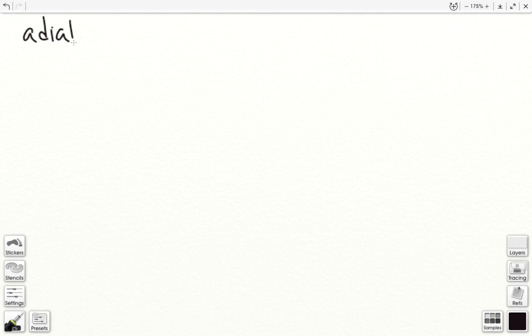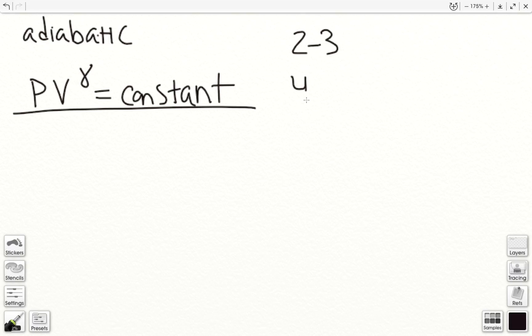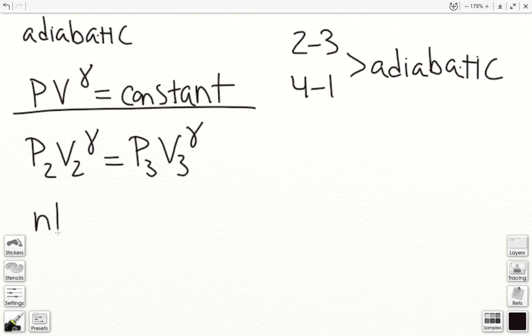Okay, so adiabatic process. We have PV to gamma is constant. And I know that the processes from 2 to 3, 4 to 1 are adiabatic. So I can apply this rule. And so I have P2V2 gamma equal to P3V3 gamma. Now I'm going to substitute here.